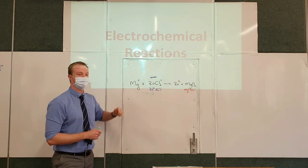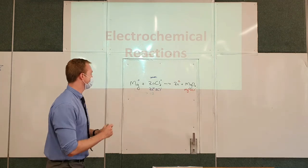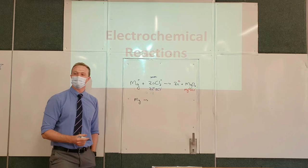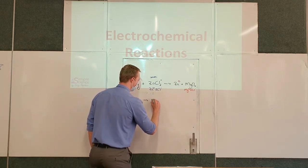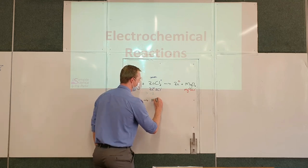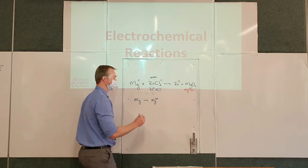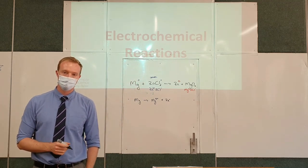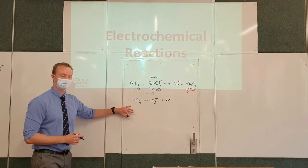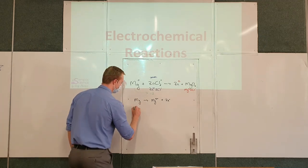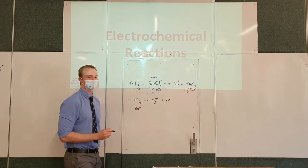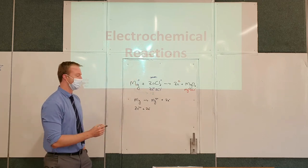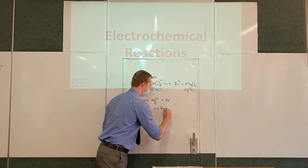There are actually two reactions taking place. The first was magnesium giving away electrons: magnesium went from being a neutral atom to a positively charged magnesium ion, meaning it gave away two electrons. The second reaction was zinc: starting as a positively charged ion, it gained two electrons to become a neutral zinc atom.